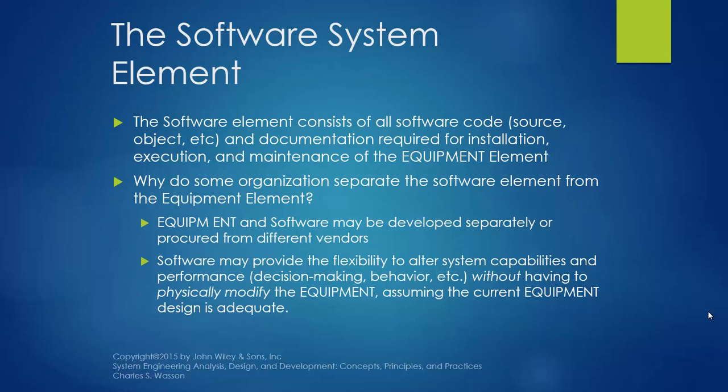The software system element consists of all software code, source objects, and documentation required for installation, execution, and maintenance of the equipment elements. Why do some organizations separate the software elements from the equipment elements? The equipment or hardware can be developed or purchased separately from a different vendor. In addition, software may provide the flexibility to alter system capabilities and performance — such as decision making or behavior — without having to physically modify the hardware or the equipment.